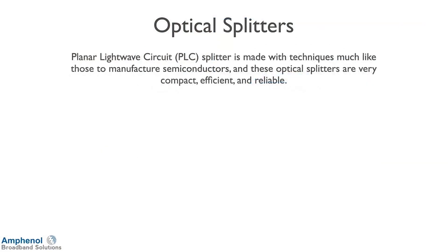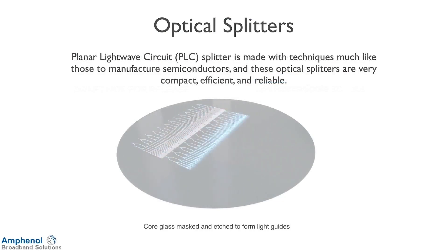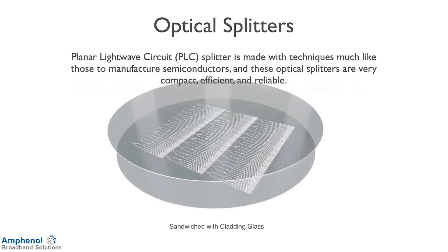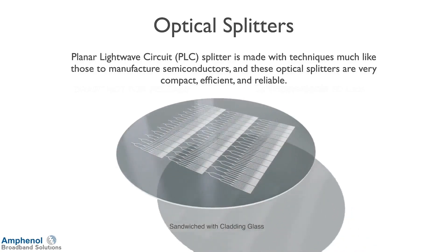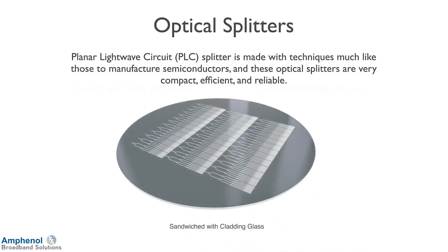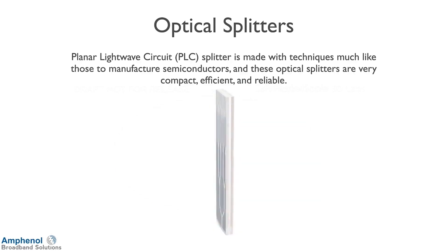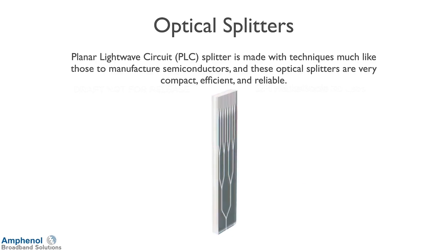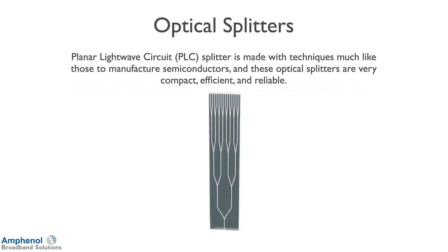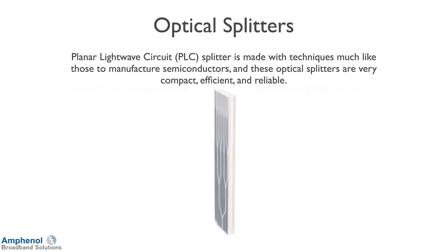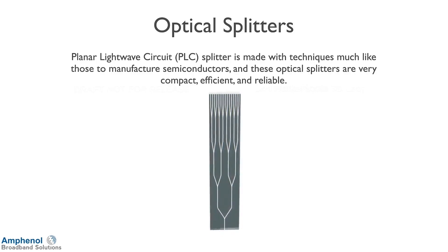Next we'll look at planar light-wave circuit, PLC, splitters. These are made very similarly to semiconductors — we take the core glass and etch it to make light paths, then take two cladding glasses over that and make a sandwich. Once sandwiched together, it's packaged in a small compact package. These splitters are very compact, efficient, and reliable.